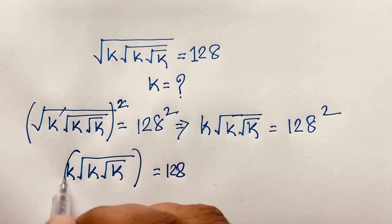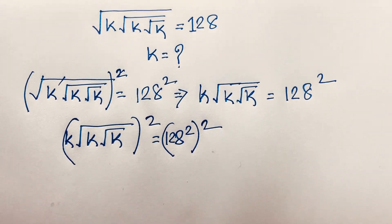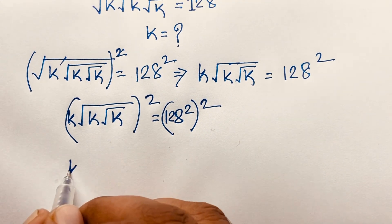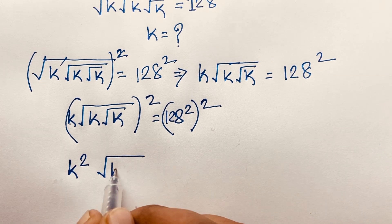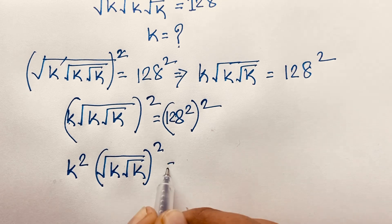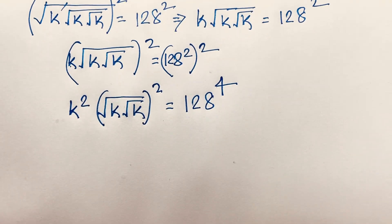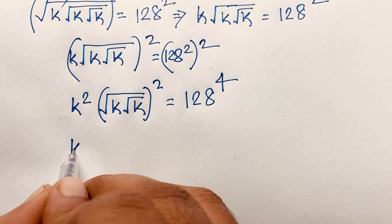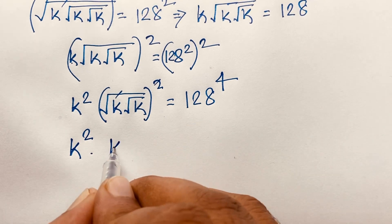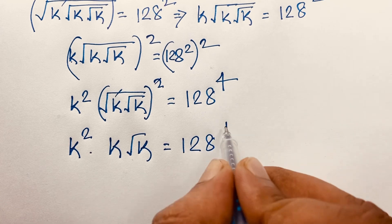Now I again use both sides whole square. You can see that this expression becomes k squared, and k times square root k whole squared is equal to 128 squared. So k squared times k, since the square root cancels, gives k squared times square root k is equal to 128 to the power 4.